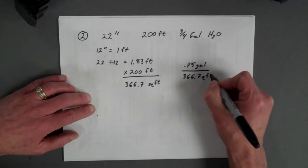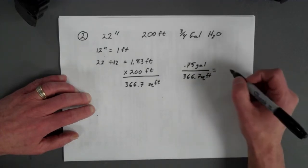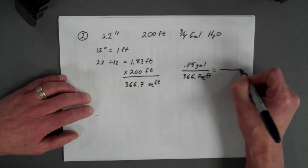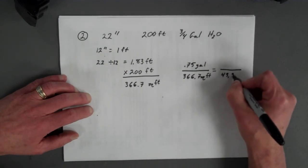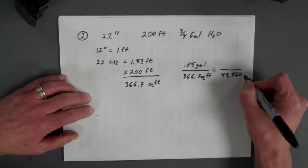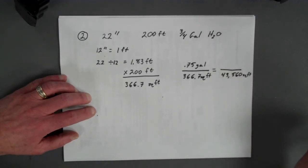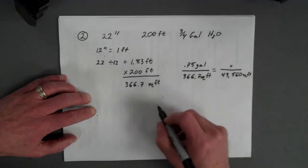So you have 0.75 gallons over 366.7 square feet. That's our known. And then the question mark is how many gallons is going to be over our acre. And we have to remember that conversion factor again of 43,560 square feet in an acre. So you do your cross multiplying at this point.